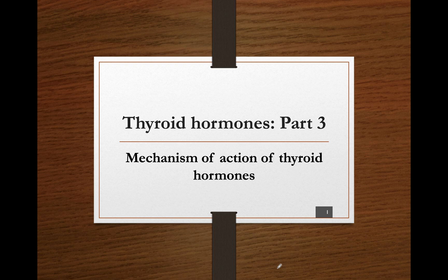With a series of lectures on thyroid hormones, this is part 3, where I'll be dealing with the mechanism of action of thyroid hormones. Thyroid hormones T4 and T3 — T3 is the active form, T4 is the inactive or pro-hormone — and most of the T4 gets converted into T3 for its ultimate action on the cell.